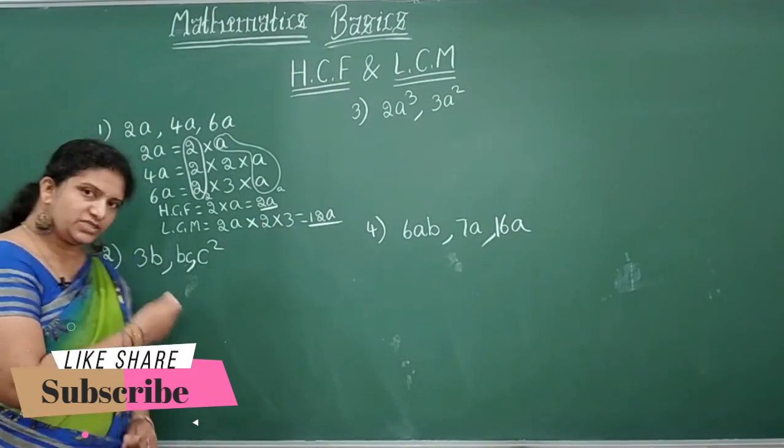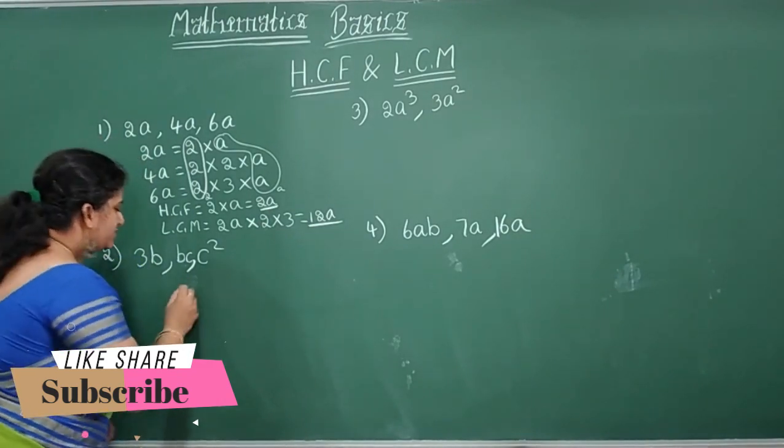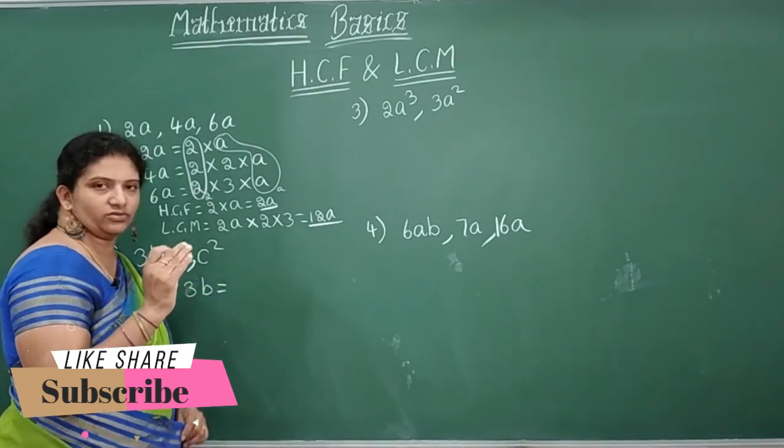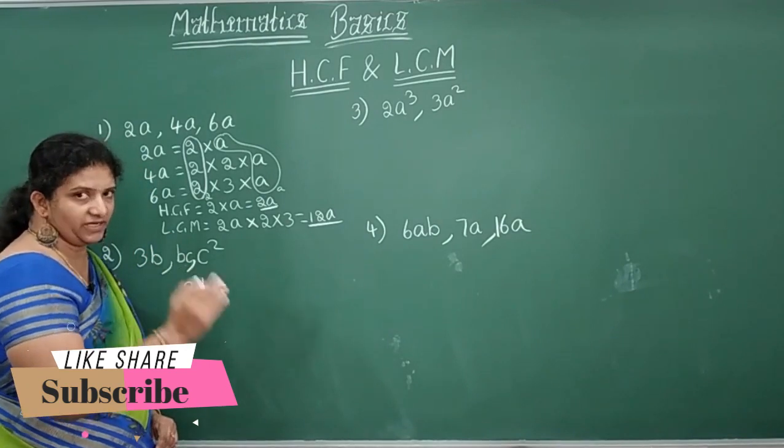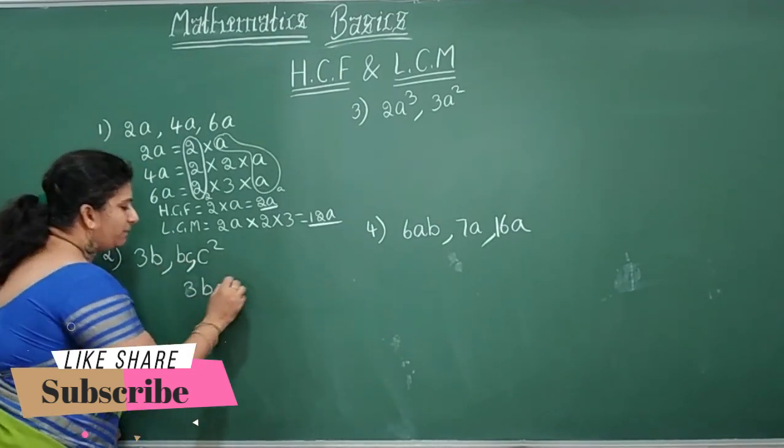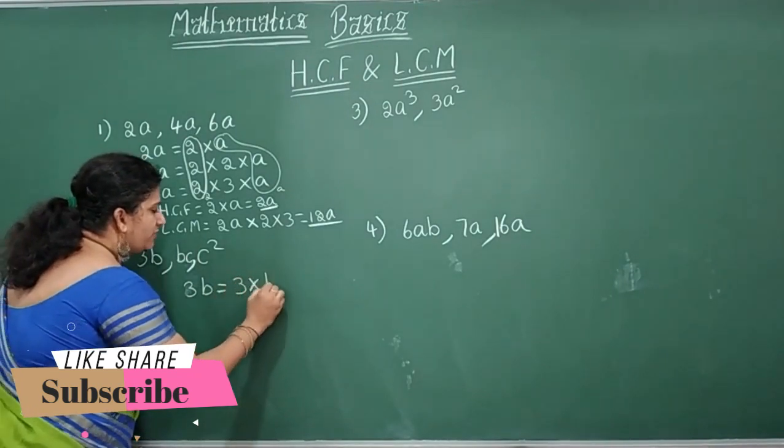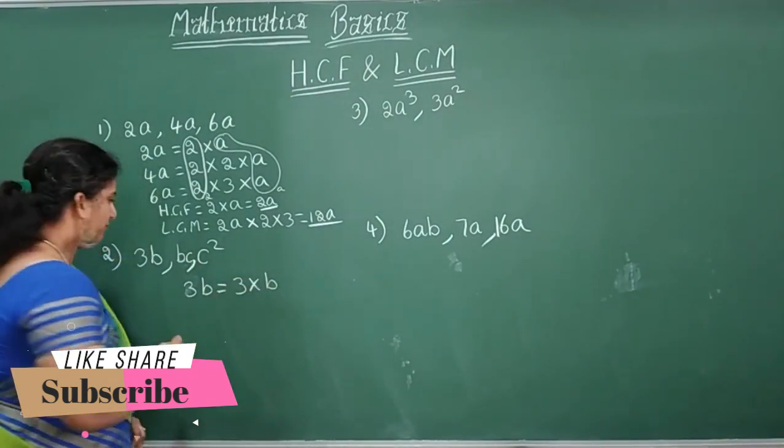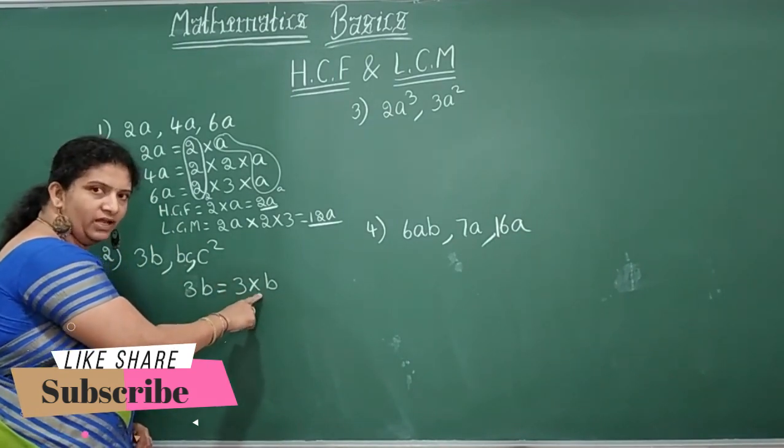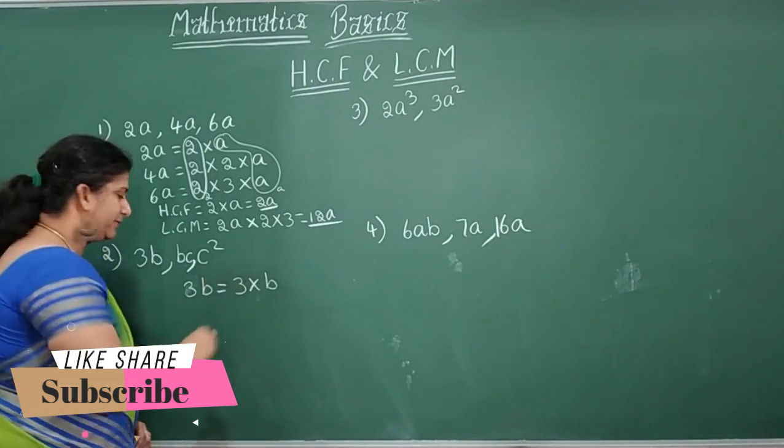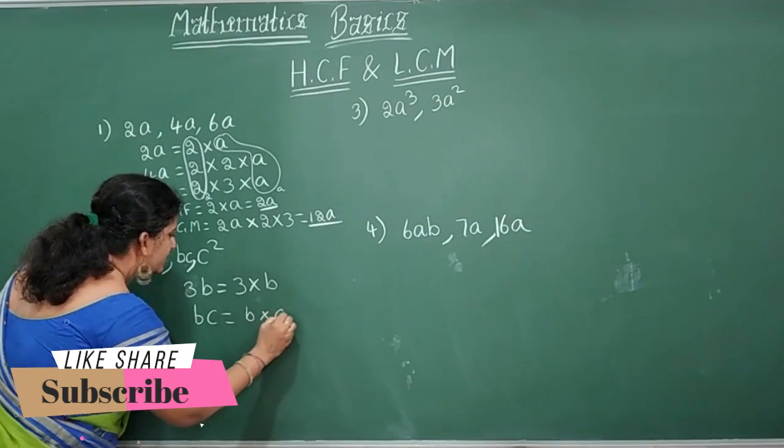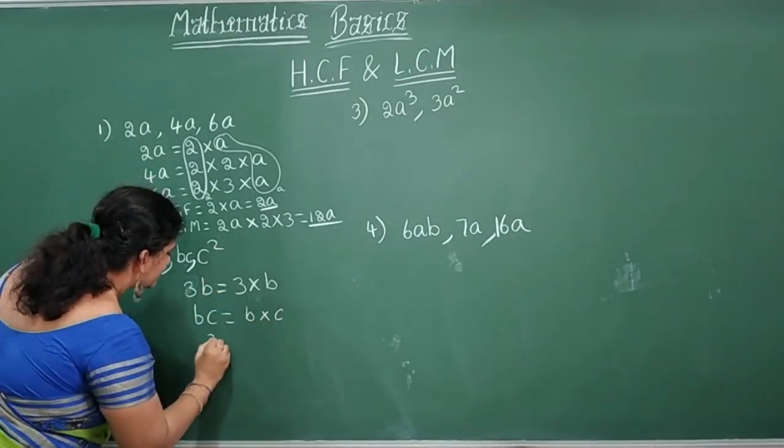So similarly, shall we see the next problem here? That is 3B children. So multiples you have to see carefully. Number you have to split separate and variables you have to split separate. 3B, I cannot split further. So I will write 3 into B or you can put a dot also. Instead of putting here into symbol, you can go with a dot. So B, C, B into C. C square.